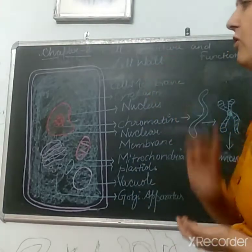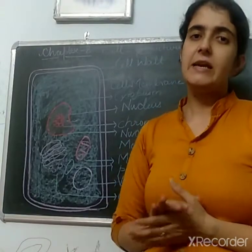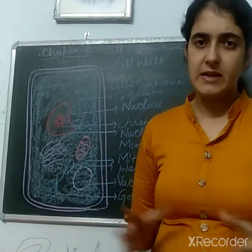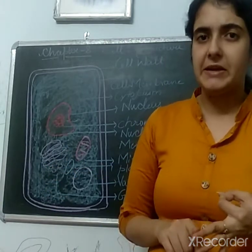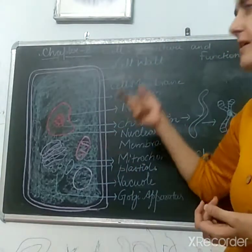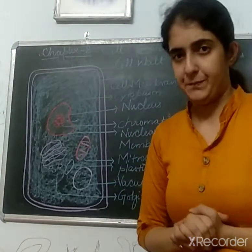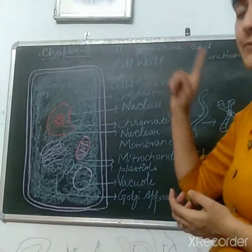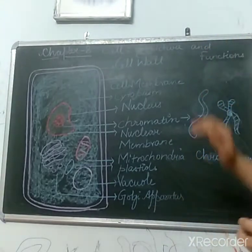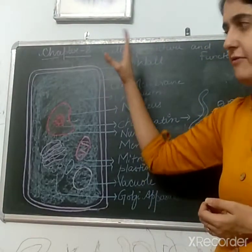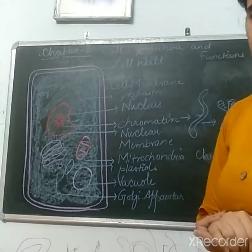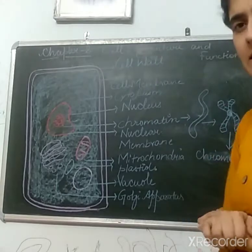The next one is cell wall. Cell wall is only present in plant cells, certain fungi, and certain bacteria. It is not present in animal or human cells. Cell wall is the hardest covering of a cell and it is located after the cell membrane — outside the cell membrane.